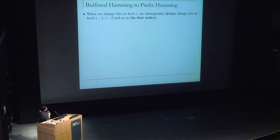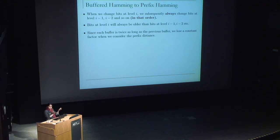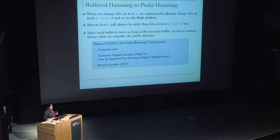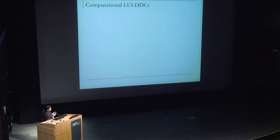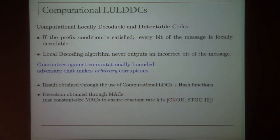At a very high level, the idea for going from buffer to prefix Hamming is that because the buffers are of specific sizes and you write into them in a way that depends on when the bits are written, you're actually able to go from the buffered to the prefix Hamming metric. Because each of the smaller buffers are twice as large as the subsequent buffers, you lose only a constant factor when going to the prefix Hamming metric. For the prefix Hamming metric, we get a constant rate code with amortized update locality of log squared k and decode locality k to the epsilon. We improve the decode locality further by going to the computational setting, combining computational locally decodable codes and hash functions.